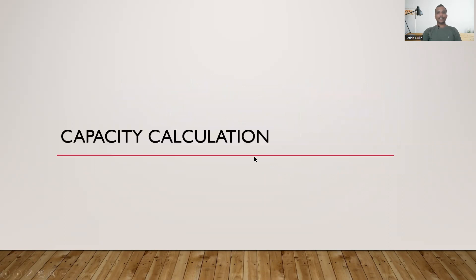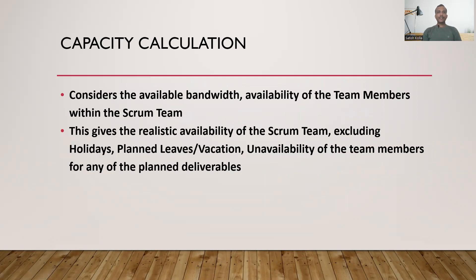First, let's quickly go through the capacity calculation. The capacity calculation considers the available bandwidth or the availability of the team members for that given scrum team. This helps the team to plan the number of stories or the number of story points — how much they can realistically deliver and commit within the given sprint. We need to make sure we exclude holidays, planned vacations, leaves, or any known unavailability of the team during the capacity calculation.